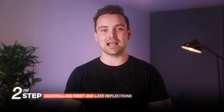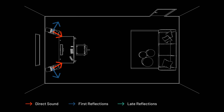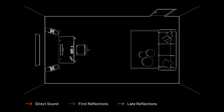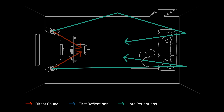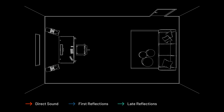Next, let's address direct sound and reflections. Proper speaker positioning is essential, with an equilateral triangle configuration ensuring precise monitoring. Near-field monitors maintain direct sound clarity. Acoustic treatment plays a key role in managing both first and late reflections, with absorptive panels and diffusers placed strategically on walls, ceilings, and corners to create a controlled listening environment.